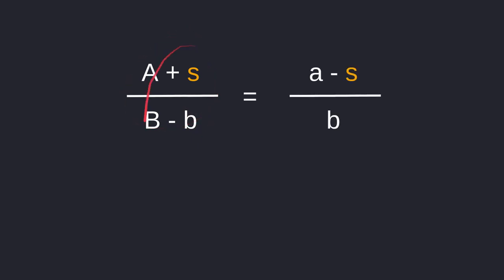After the swap, the reserve ratio of token A to token B inside Uniswap is equal to A plus S over B minus lowercase b. S is the amount of token A that was swapped and lowercase b is the amount of B tokens that we got. This reserve ratio must equal the ratio of tokens that we have — we started out with a tokens, sold S amount, and got back b tokens. The reserve ratio before adding liquidity must equal the reserve ratio after adding liquidity, which guarantees that all of our A tokens and all of our B tokens will be utilized as liquidity.